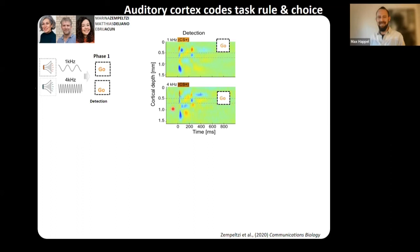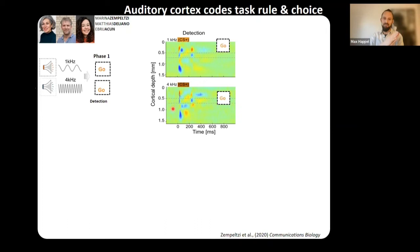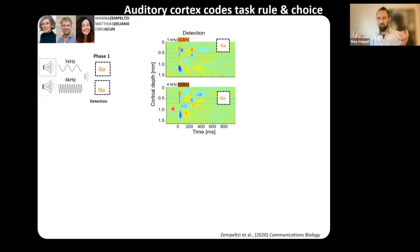This was surprising, because the auditory cortex is believed to be organized as a topographic map—like a piano—where each region corresponds to a certain sound frequency. In an anesthetized animal, you indeed see a topographic organization. However, in an animal solving this detection task, we found that when two sounds had the same meaning, their processing in the auditory cortex was also not different.